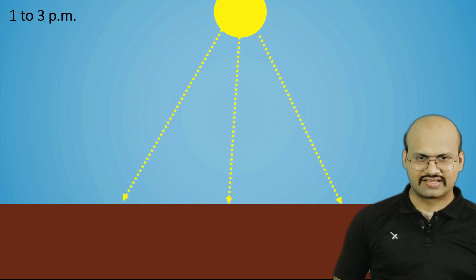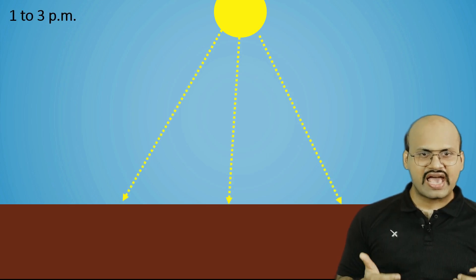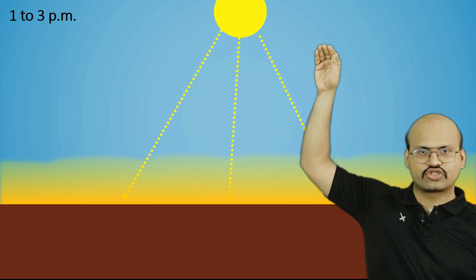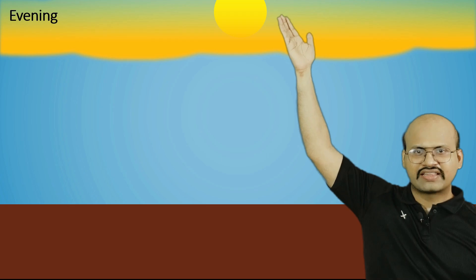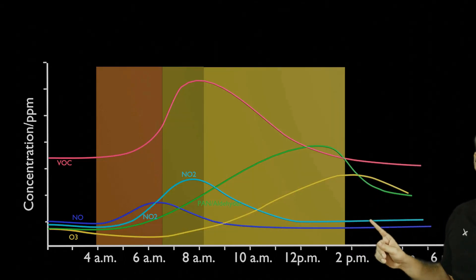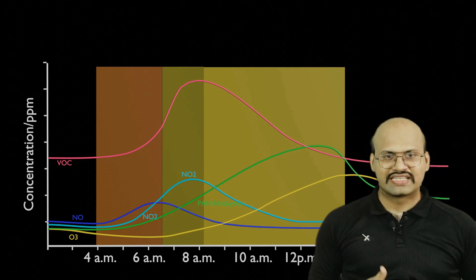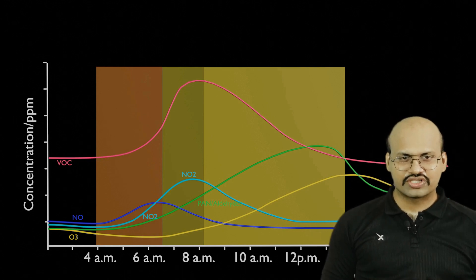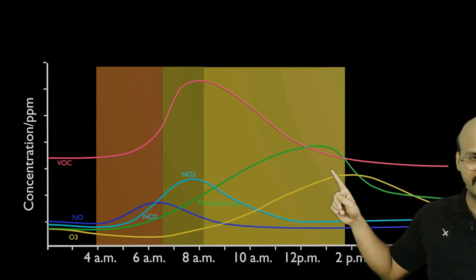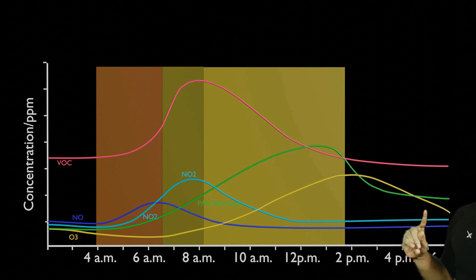By evening, the sun has been directly heating the Earth, so the air above the Earth is heated and rises up, since the layer above is cooler. This warmer air rising up takes a lot of secondary pollutants with it, causing a sudden drop in all these pollutants by evening. Moreover, sunlight decreases so the process of photo dissociation stops. Therefore there is a decrease in all these pollutants, and the formation of ozone also starts to decrease by evening.